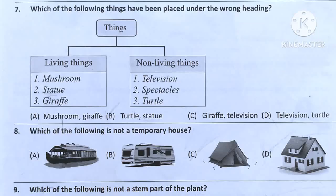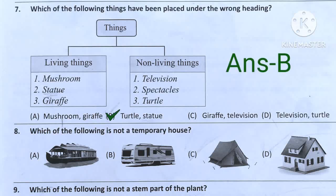Question number 7. Which one of the following things has been placed under the wrong heading? Living things listed: mushroom, statue, giraffe — so statue is wrong here. Non-living things listed: television, spectacles, turtle — so turtle is wrong there. The answer will be Option B.